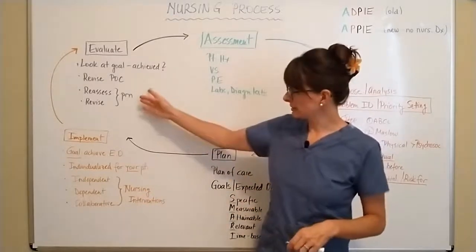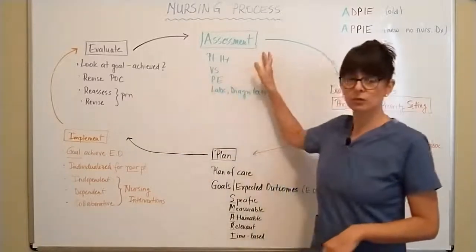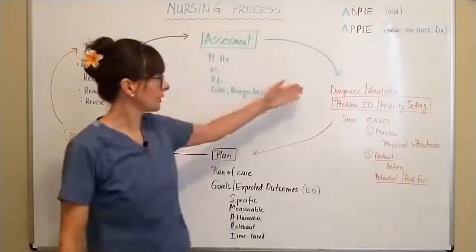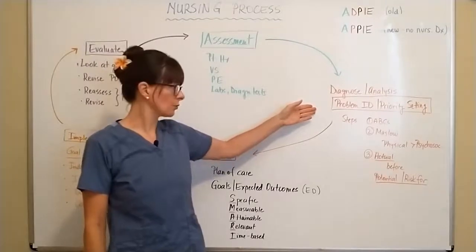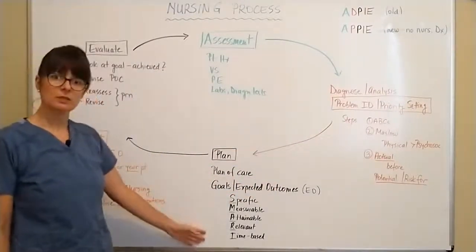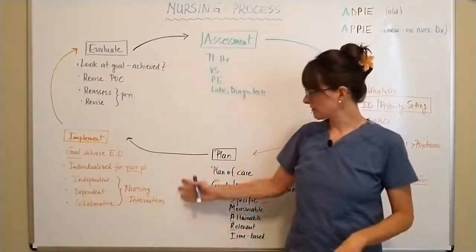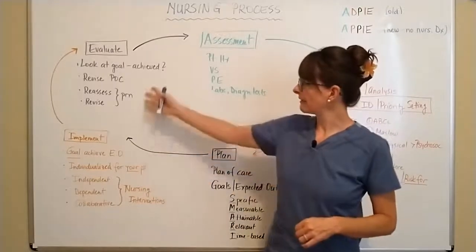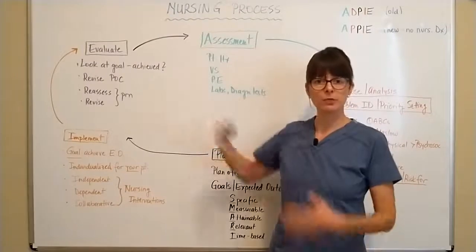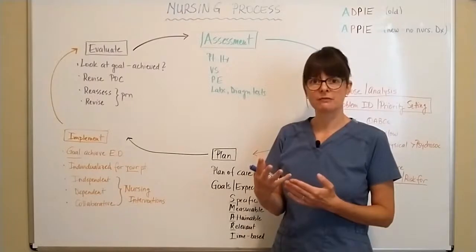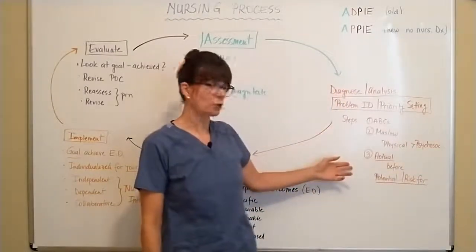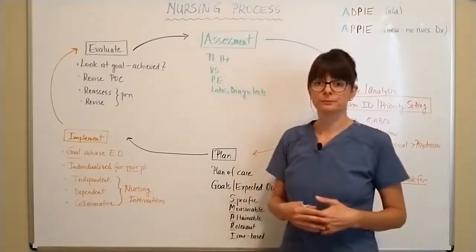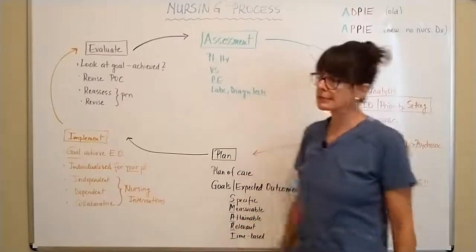Going back means reassessing the patient — physical assessment, vital signs, labs and diagnostics, any orders — then re-prioritizing, identifying new problems, planning, and coming up with a new goal following the SMART criteria. Based on that, interventions might be different from the first round. Once the goal is achieved, check that off and move to the next identified problem. For example, once your oxygenation goal is met but the patient is still at risk for falls, you address that with appropriate interventions and patient education. Prioritization here is very important and this is a continuous process.